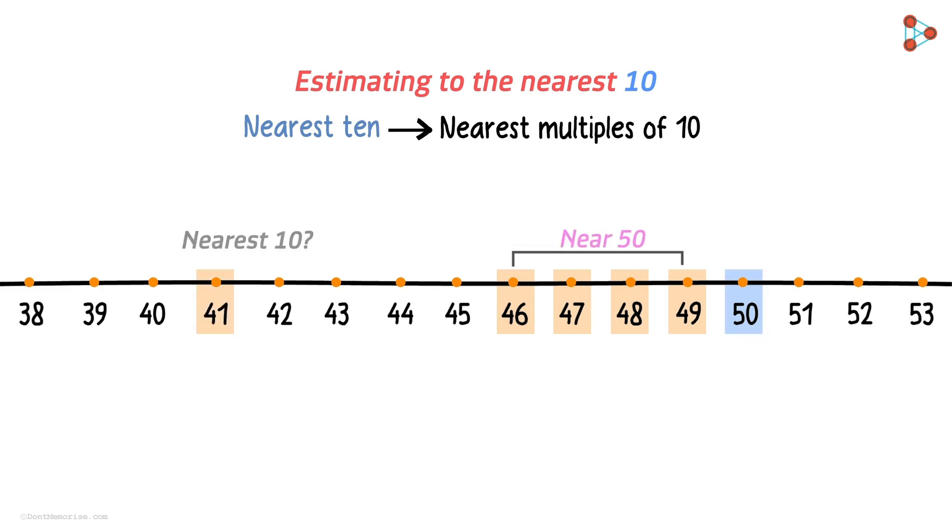What about 41? Is 50 here the best estimation for 41 to the nearest 10? Not really. If we are talking about the nearest multiple of 10, then 40 is much nearer to 41 than 50. So 40 is the best estimation of 41 as the nearest multiple of 10. 40 is also the best estimation of 42, 43 and 44.